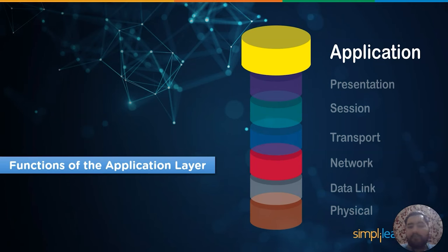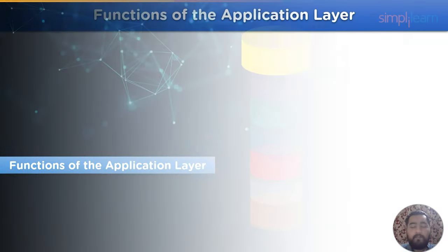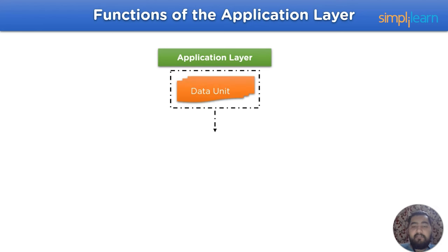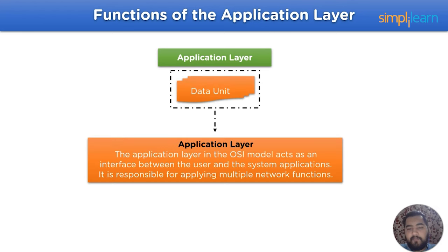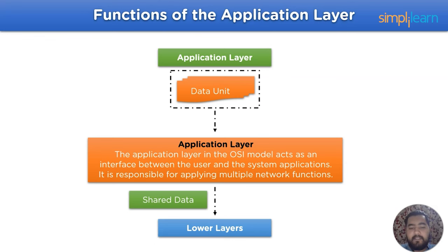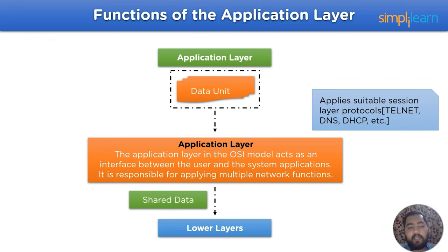Before covering the functions of the application layer, let's take a look at a brief working of the application layer in an OSI model. The application layer shares data units with the lower layers. It acts as an interface between the user and the system applications, applying multiple network functions and protocols — such as Telnet, DNS, and DHCP — to better understand and prepare data for the lower layers.